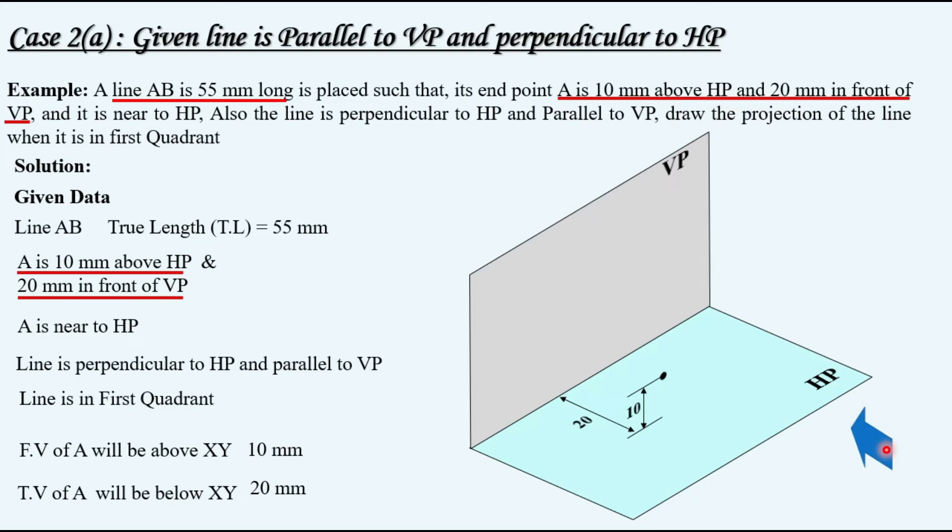Now what is the name of this point? It is mentioned out of line AB the endpoint A is near. So this will be A. Now line can be placed vertically perpendicular to HP like this or like this. Out of these two positions only one is correct. Why? Because in the question it is mentioned line is in first quadrant.